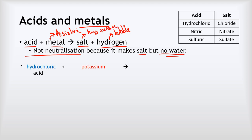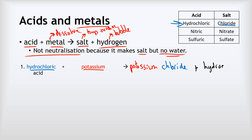Looking at some worked examples — we name the salts in the same way as before. For hydrochloric acid reacting with potassium: potassium gives us the cation, and hydrochloric acid produces chloride salts, so this will be potassium chloride. This time we're not making water; we're producing hydrogen because metals reacting with acids produce hydrogen.